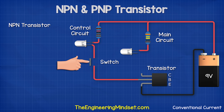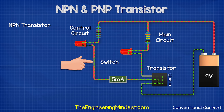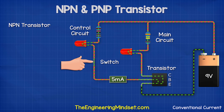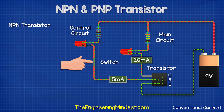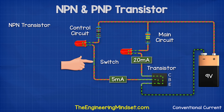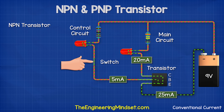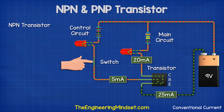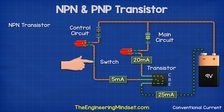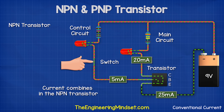In this simplified example, when the switch is pressed, there are 5 mA flowing into the base pin. There are 20 mA flowing into the collector pin and 25 mA flowing out of the emitter. The current therefore combines in this transistor.